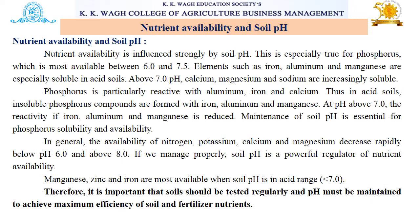In general, the availability of nitrogen, potassium, calcium and magnesium decreases rapidly below pH 6 and above pH 8. If managed properly, soil pH is a powerful regulator of nutrient availability. Manganese, zinc and iron are most available when soil pH is in the acid range, that is below 7. Therefore, it is important that soil should be tested regularly and pH must be maintained to achieve the maximum efficiency of soil and fertilizer nutrients.